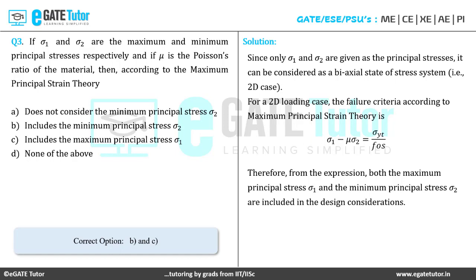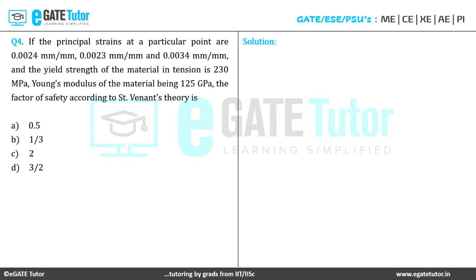Let us move on to question 4: If the principal strains at a point are ε₁ = 0.0024 mm/mm, ε₂ = 0.0023 mm/mm, and ε₃ = 0.0034 mm/mm, the yield strength is 230 MPa, and Young's modulus is 125 GPa, the factor of safety according to Saint-Venant's theory (i.e., maximum principal strain theory) is to be determined.